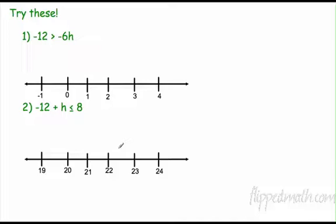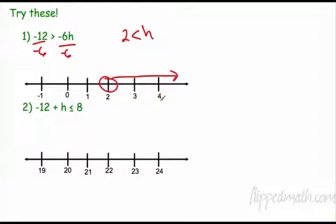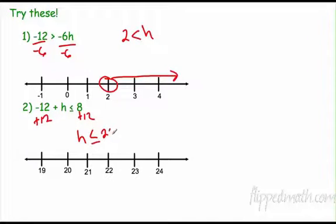Pause the video and try these two, then we'll see if you got them right. Welcome back. I need to divide by negative 6, and when I divide I have to switch. Negative 12 divided by negative 6 — there's a sign change — that's 2 is less than h. Open dot, and I want all numbers bigger than 2, going this way. Down here I add 12, and h is less than or equal to 20. Open dot, and I want all numbers less than that going this way.